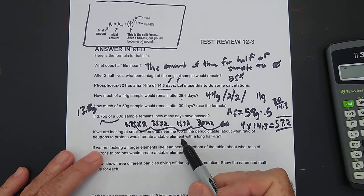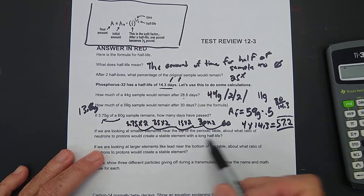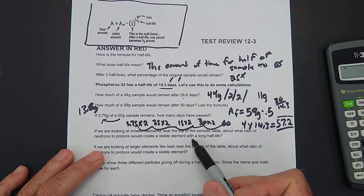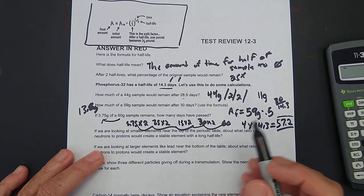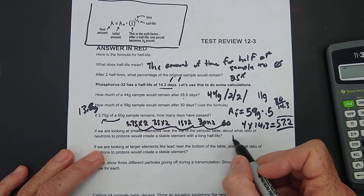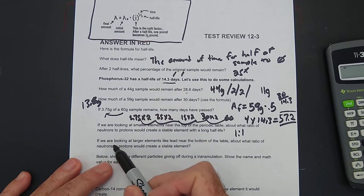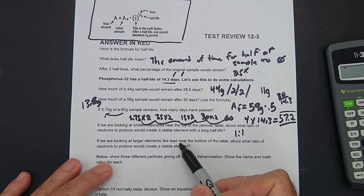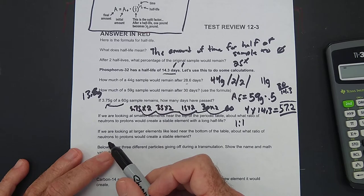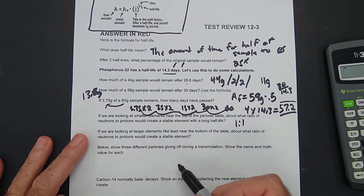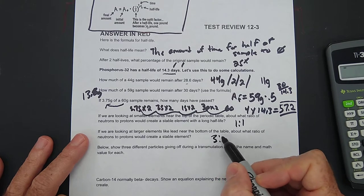If we're looking at smaller elements near the top of the periodic table, about what ratio of neutrons to protons would create a stable element with a long half-life? That's from your notes. It's 1 to 1 for small elements. If we're looking at larger elements like lead near the bottom of the table, about what ratio of neutrons to protons would create a stable element? Also from your notes, 3 to 2.